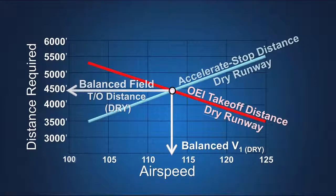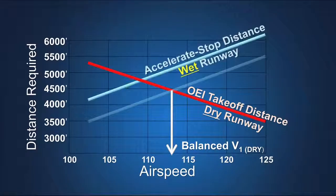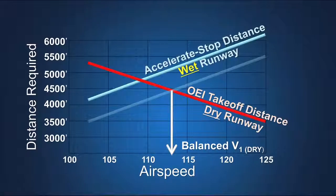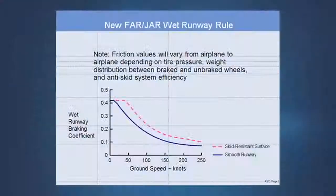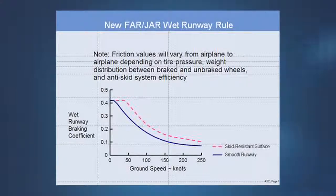When the runway is wet, the accelerate stop distance increases due to reduced friction during braking. The braking friction on a wet runway varies greatly with speed, while it is essentially constant with speed on a dry runway. At faster speeds, the wet runway braking friction is much lower than at slower speeds.